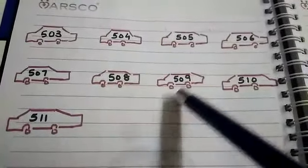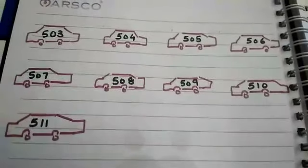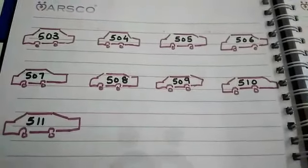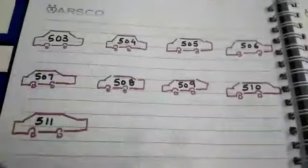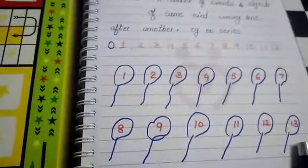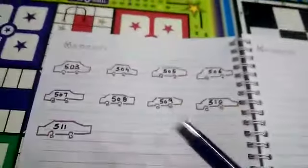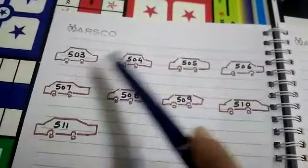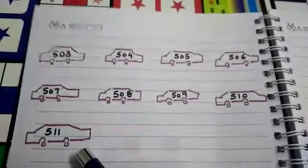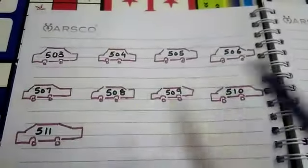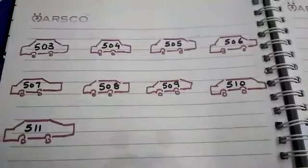So this is how a number series we follow. Now we have seen three series. One is from number 1 to 13, another is from 100 to 107, and the next series is from 503 to 511. I hope you must have understood what is number series.